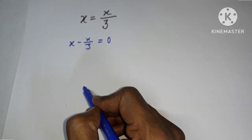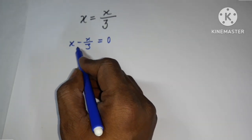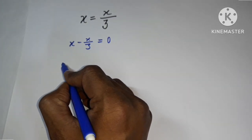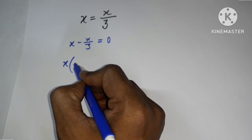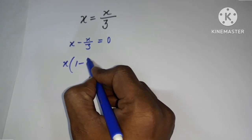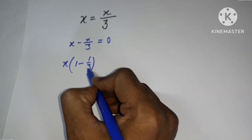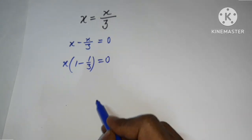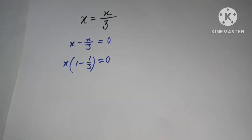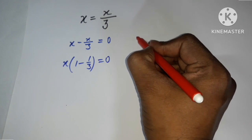Then I can take x common, so x times (1 minus 1 upon 3) equals 0. For this product, either x will be equal to 0 or...